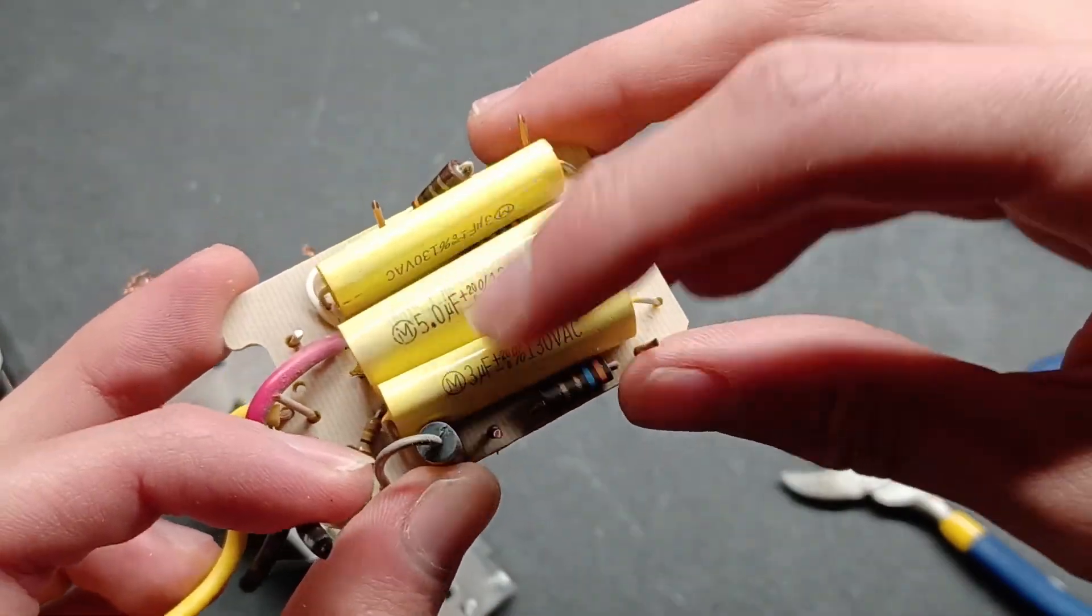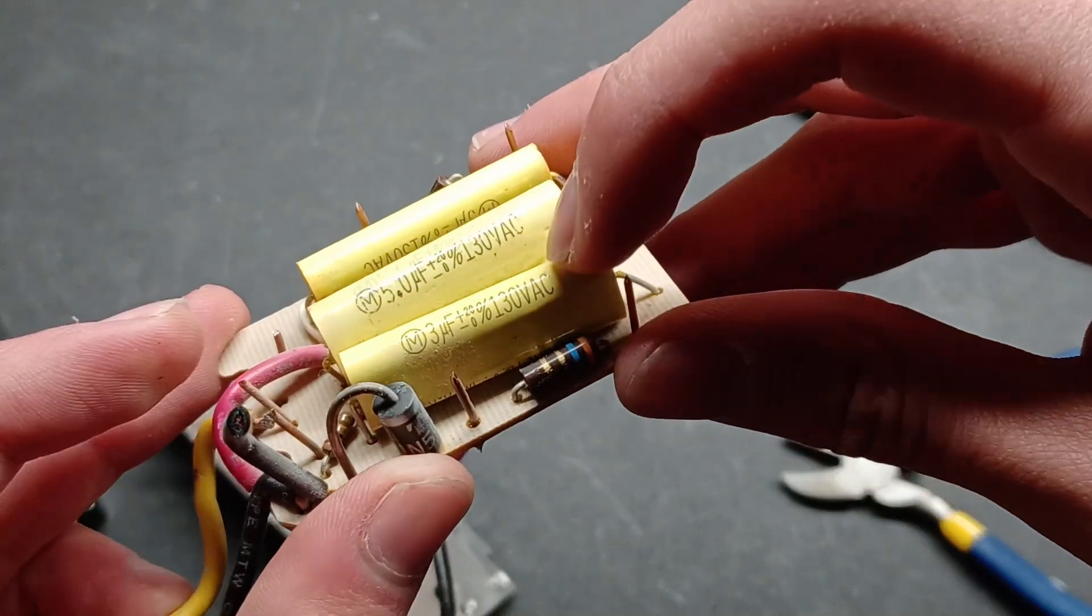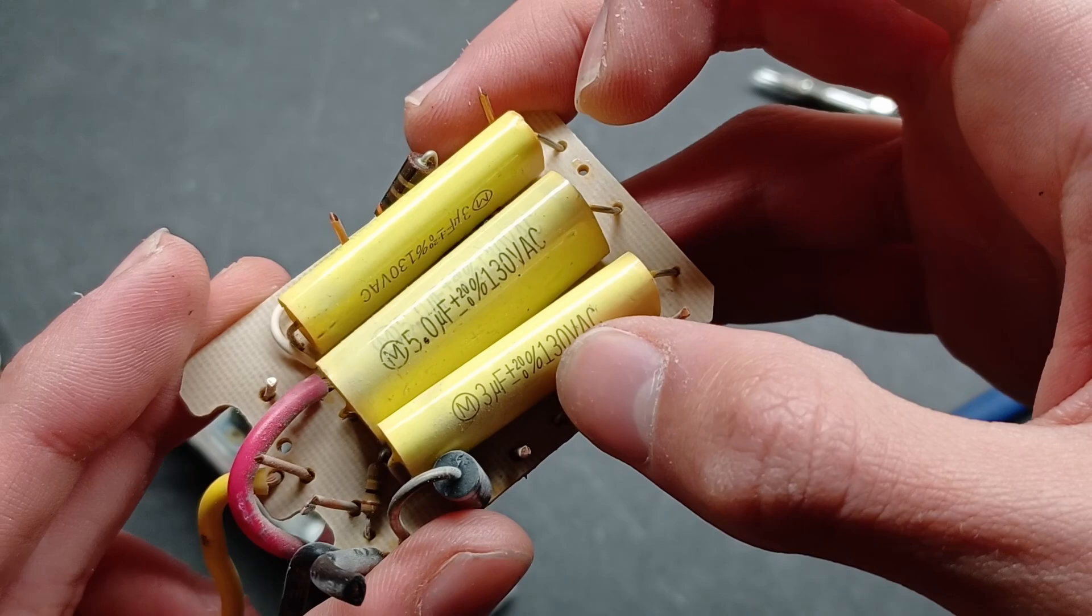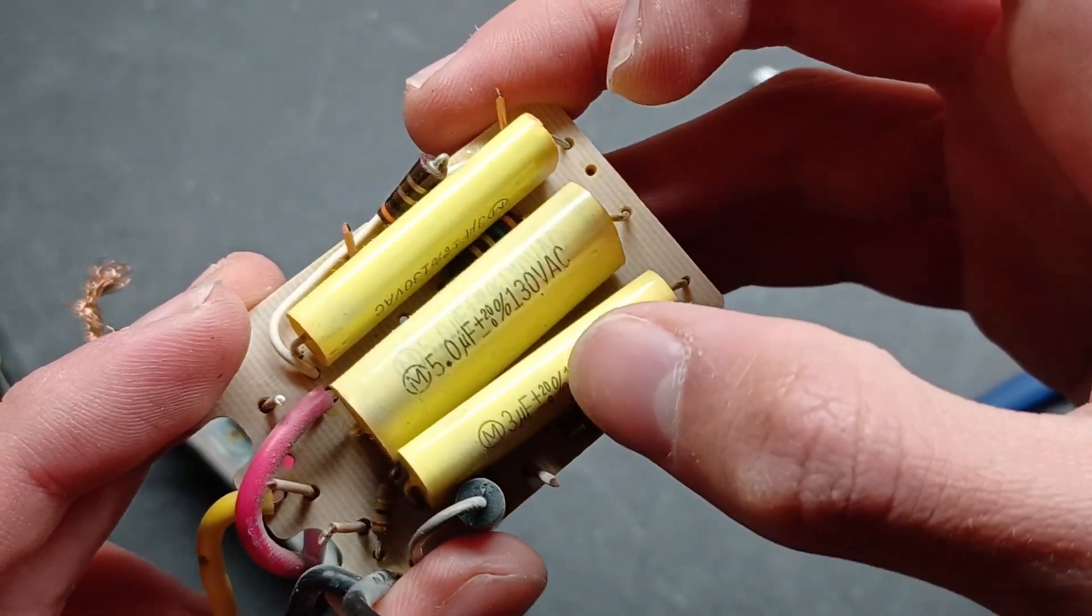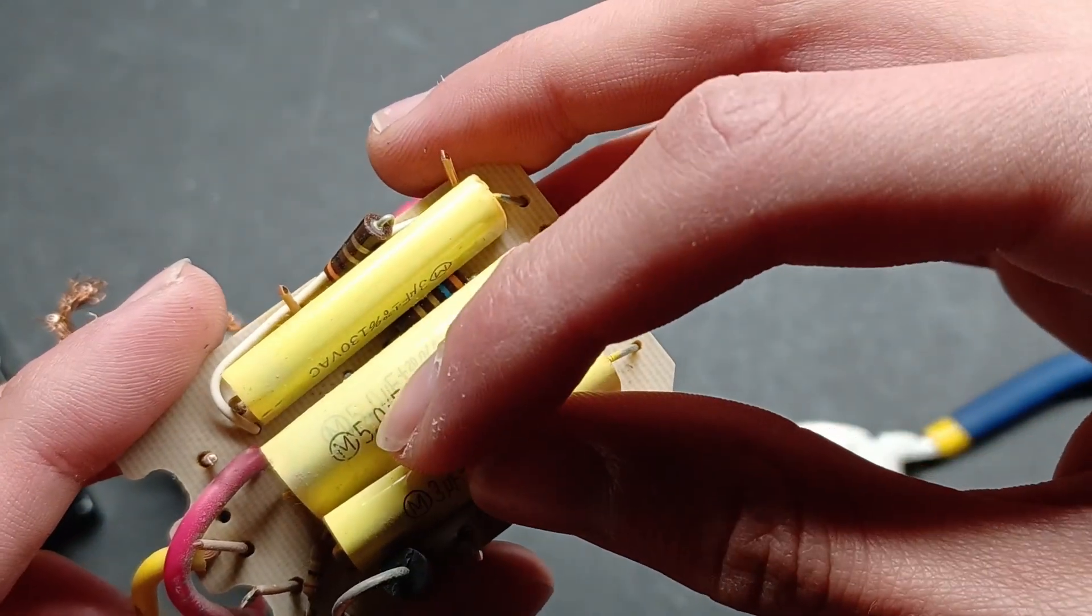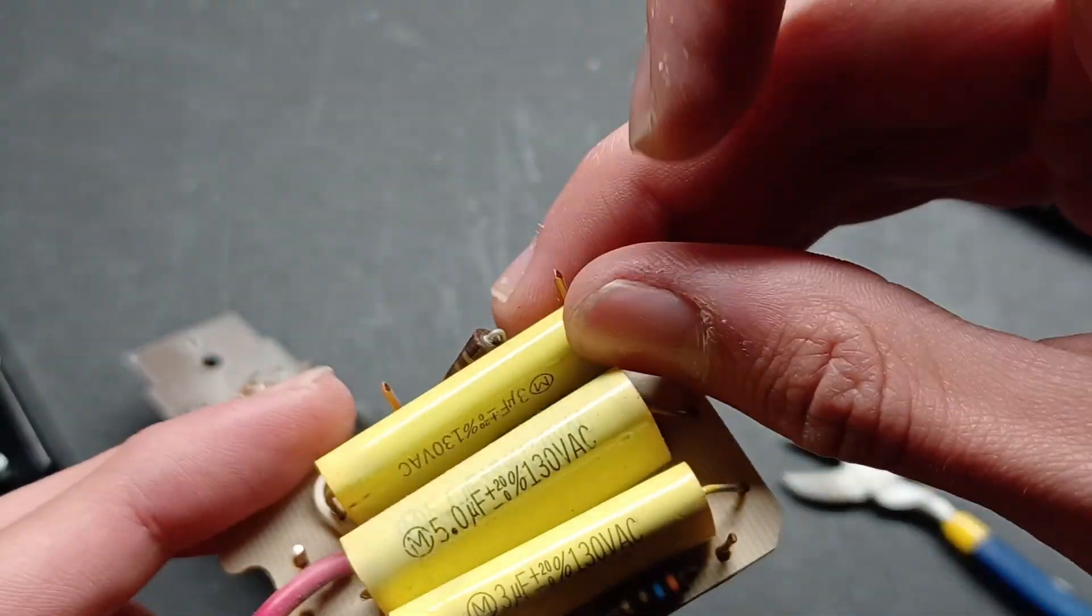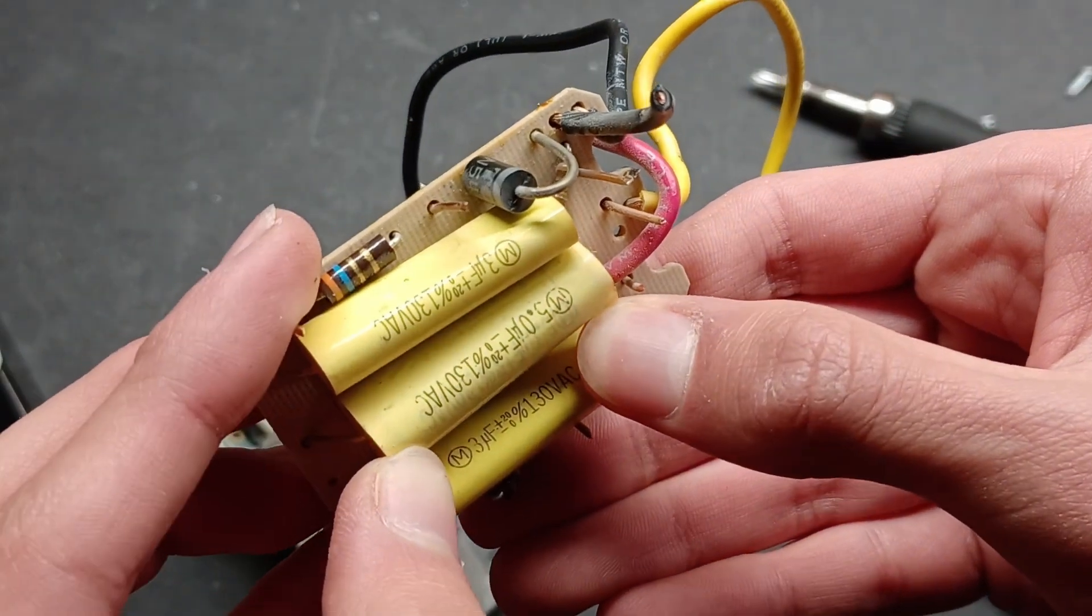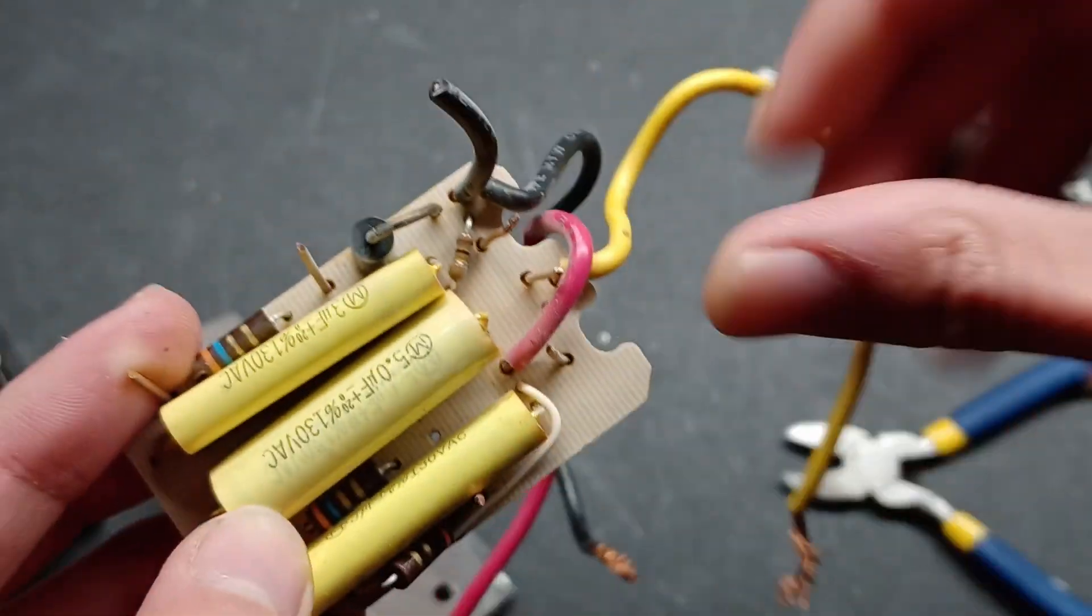we can see that it uses three capacitors for selecting the speed. There is a 3 microfarad capacitor rated at 130 volts AC, a 5 microfarad capacitor rated at 130 volts AC, and another 3 microfarad capacitor rated at 130 volts AC.